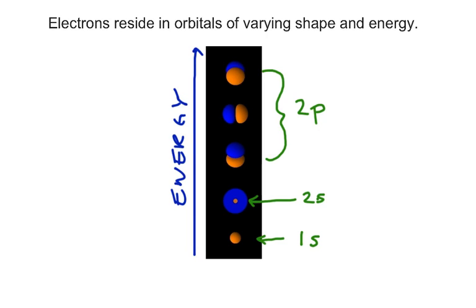If you get really fancy, you might call one the 2px, the 2py, and the 2pz. Those just basically designate what axis they're aligned with in space. Key things to remember: electrons reside in orbitals that have varying shapes and energies. Energy in general increases as you go up, but also remember that the 2p are all equal in energy.